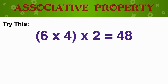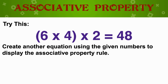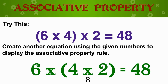Let's try this one: here we grouped 6 times 4 and multiplied that by 2 to give us a product of 48. Can you think of another equation using the given numbers to display the associative property rule? Remember, associative means to group. If you said we group 4 times 2, which gives us 8, and multiply 8 by 6 to get 48, then you are correct.